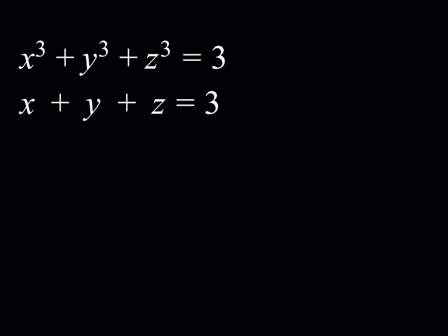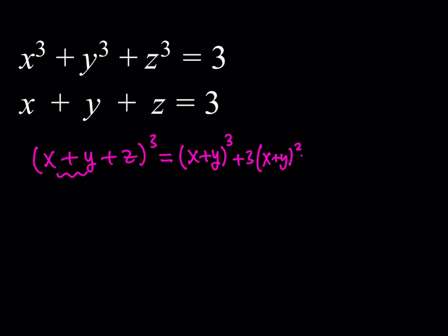The first thing I want to use is: if I cube x plus y plus z, I'm going to show you what that looks like. I'd like to do it in a smart way — treat this as a quantity and cube it like an a plus b quantity cubed. And if I do that, I can use some shortcuts. You'll probably remember those. So let me go ahead and write it down.